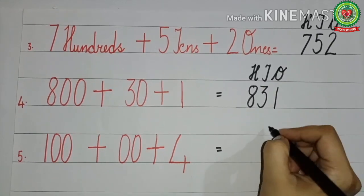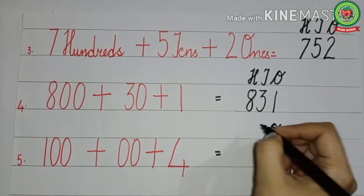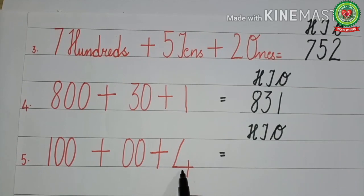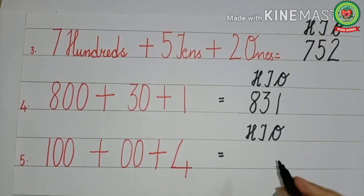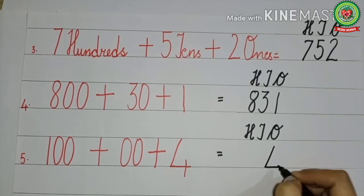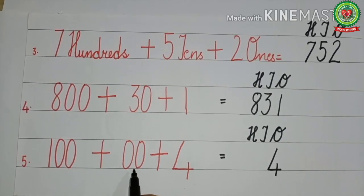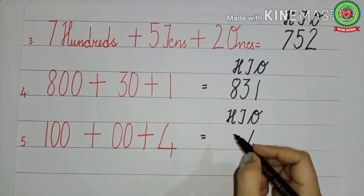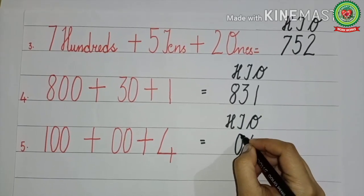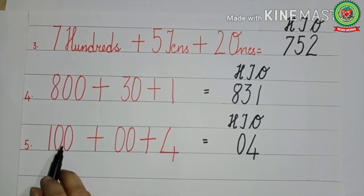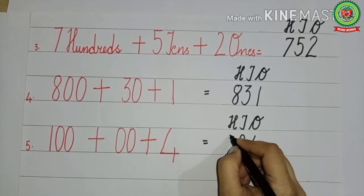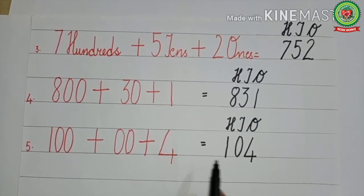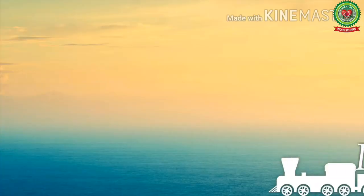Let's look at another example: 100 plus 00 plus 4. It is a three-digit number, so we write the place value chart for ones, tens, and hundreds. 4 has no zero, so it comes under ones. Zero zero has one zero, so we write 0 under tens. For hundreds, we write 1. Therefore, 100 plus 0 tens plus 4 equals 104.